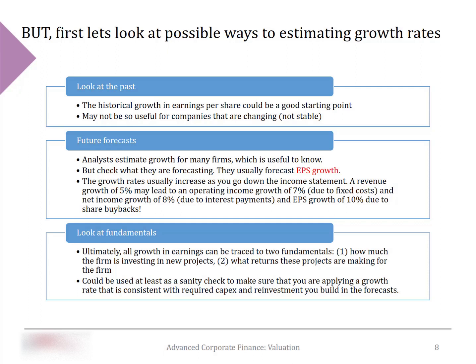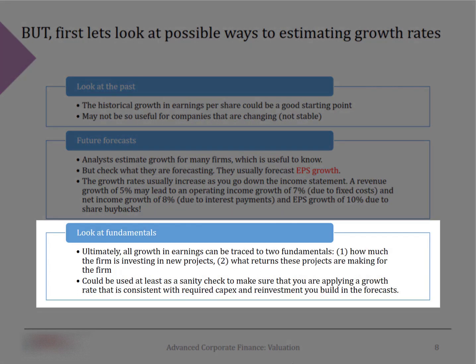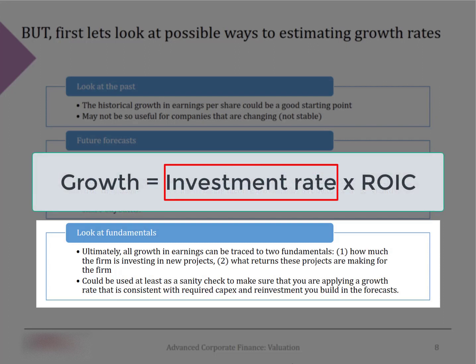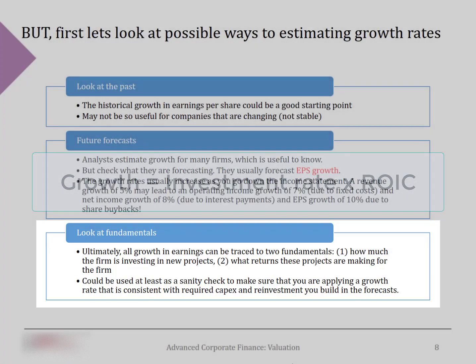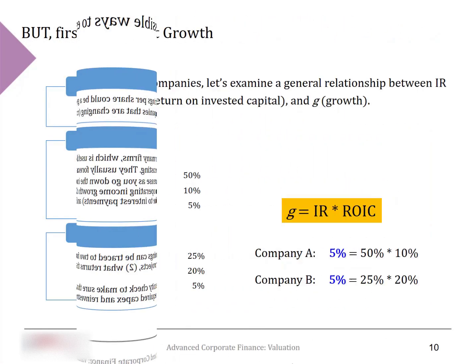The third approach is to look at fundamentals. Growth happens either because of more investments or because of higher return on those investments. The advantage of this fundamental approach is that the growth rate becomes an endogenous variable determined by how the firm operates, rather than an exogenous input. So to achieve higher growth, you either need to invest more or invest in higher-quality projects with higher return on capital.